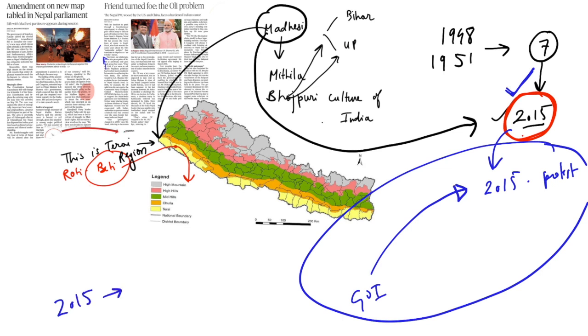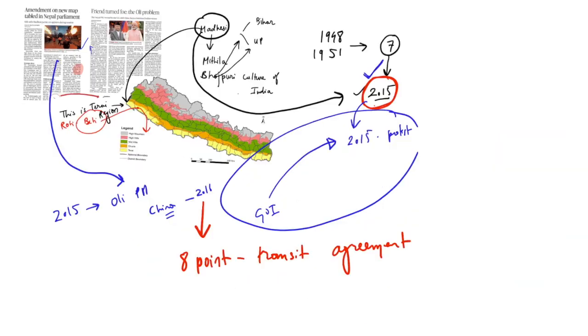Mr. K.P. Sharma Oli, who is right now the Prime Minister and is moving all these things, he was very much supportive of India before 2015 and after that only, he started to go against India and also shake hands with China. Because in 2016, 8-point transit agreement was signed with China which actually tried to replace India with China as a major supplier.